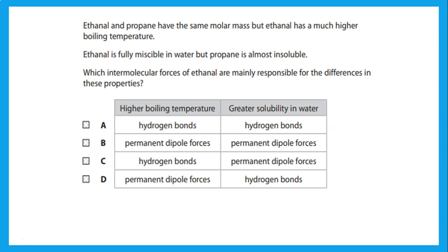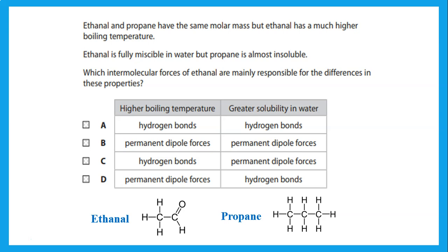Ethanol and propane have the same molar mass, but ethanol has a much higher boiling temperature and is fully miscible in water while propane is almost insoluble. The higher boiling temperature of ethanol is due to permanent dipole-dipole interactions, while the greater solubility of ethanol in water is due to the formation of hydrogen bonds with water.